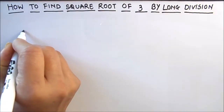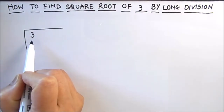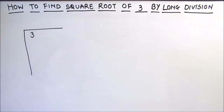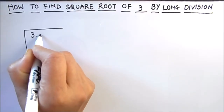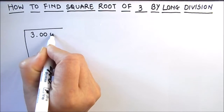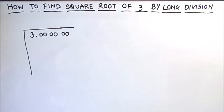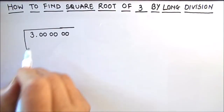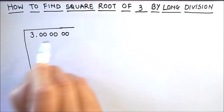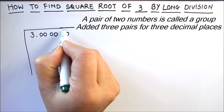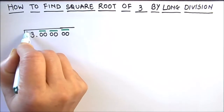The first step for finding the square root of any number using the long division method is to write the number. As our number 3 is a single digit number and we are finding the square root up to 3 decimal places, we are going to write number 3 followed by a decimal and 3 groups of zeros. Making groups is the first step, so we have added 3 groups of zeros. By adding these zeros there is no change in the value of 3. Let's mark the groups as 1, 2, 3. The fourth group will be the single number 3.